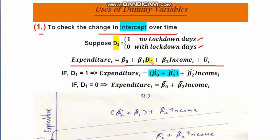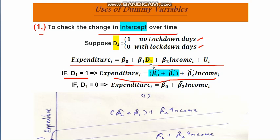After estimation, if D1 equals 1 — representing no-lockdown days — the regression equation becomes expenditure equals beta-naught-cap plus beta-1-cap plus beta-2-cap times income. That is, the estimated intercept becomes beta-naught-cap plus beta-1-cap, since D1 equals 1 adds the beta-1-cap term to the intercept.